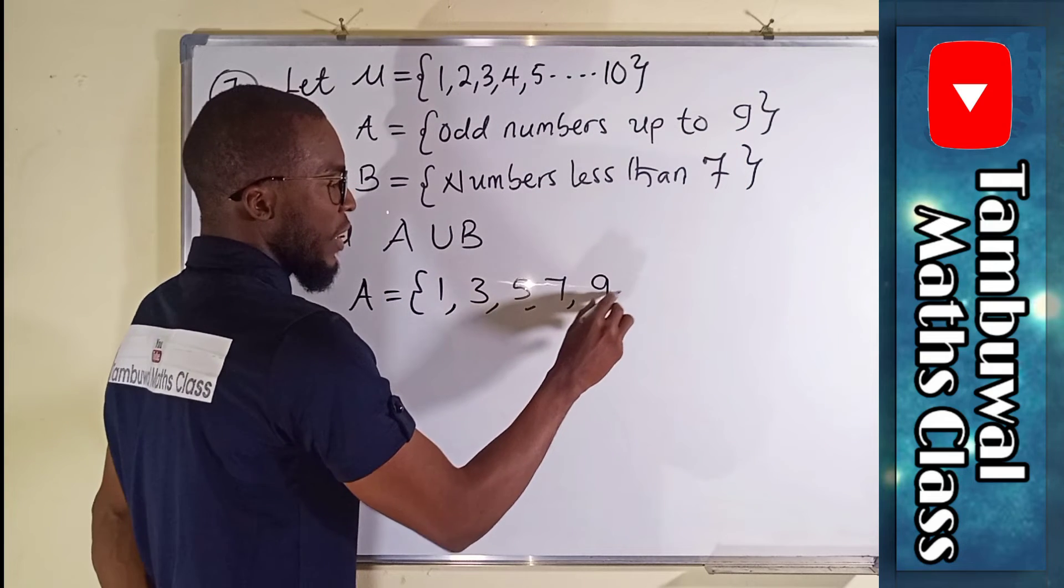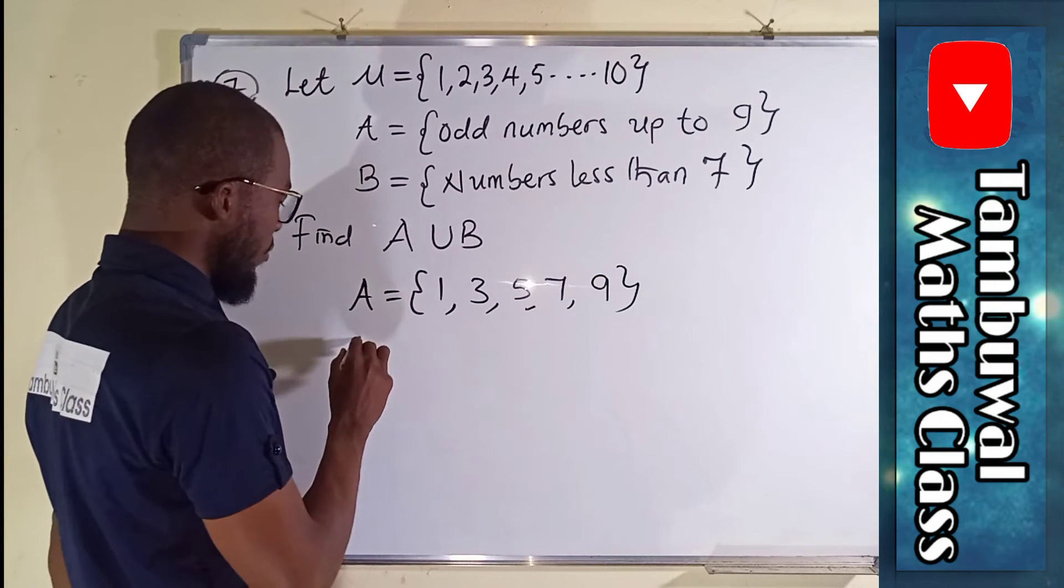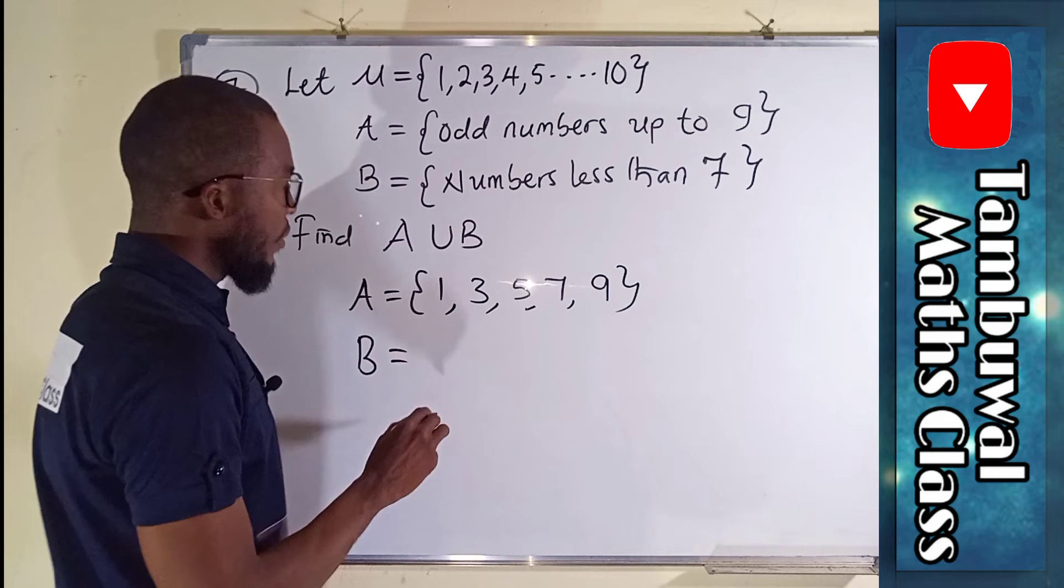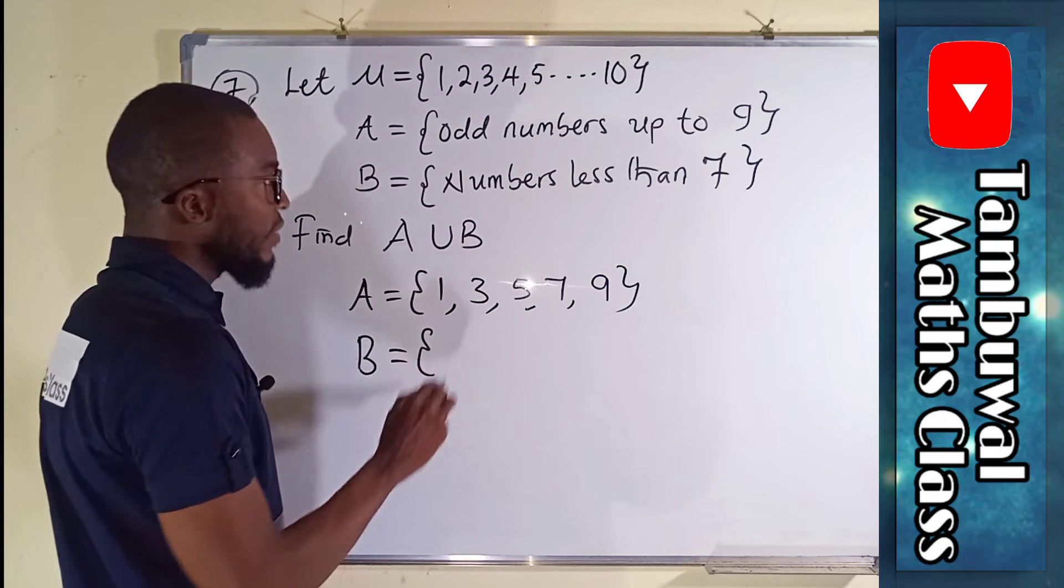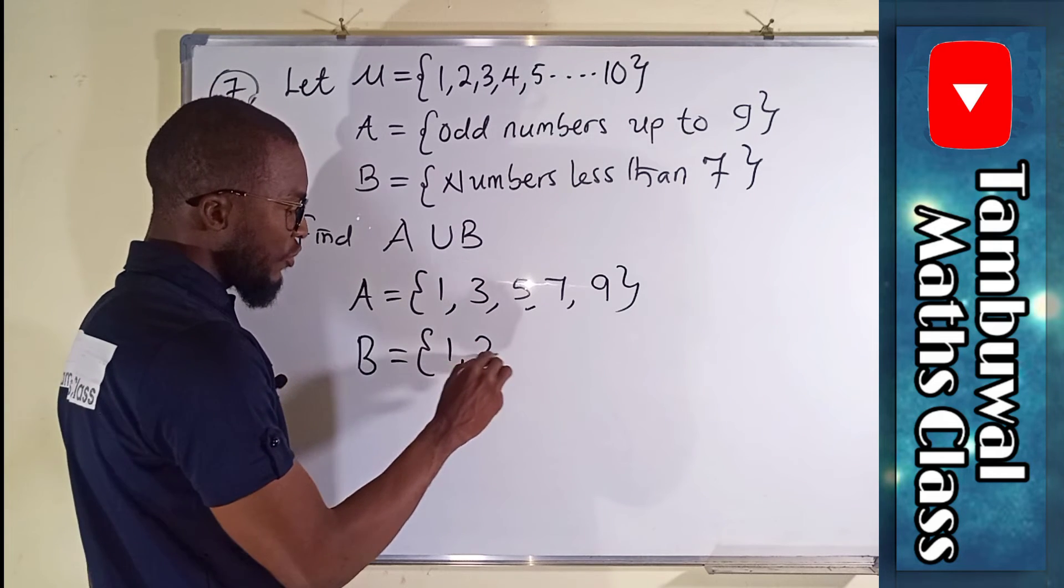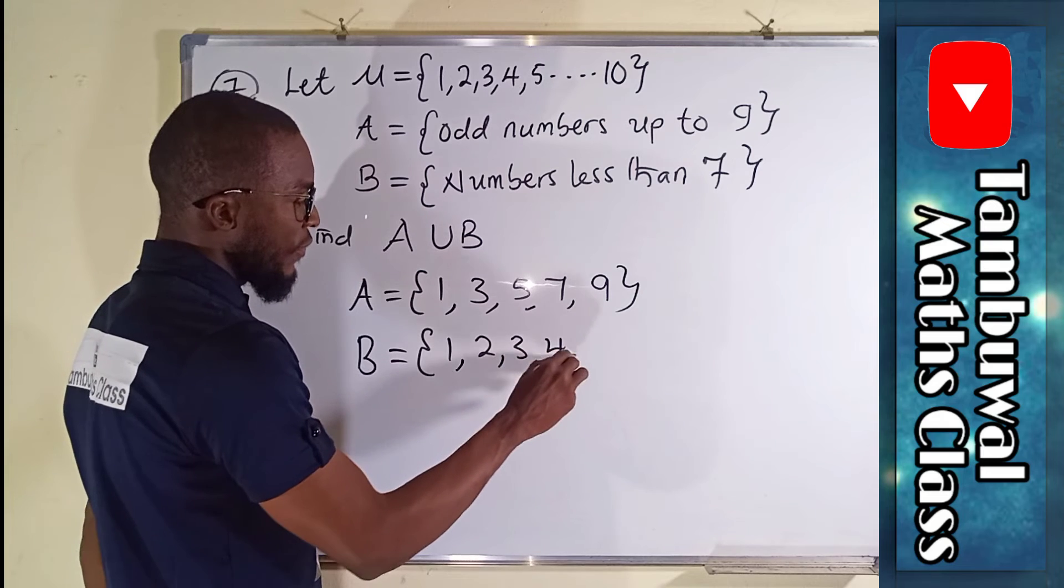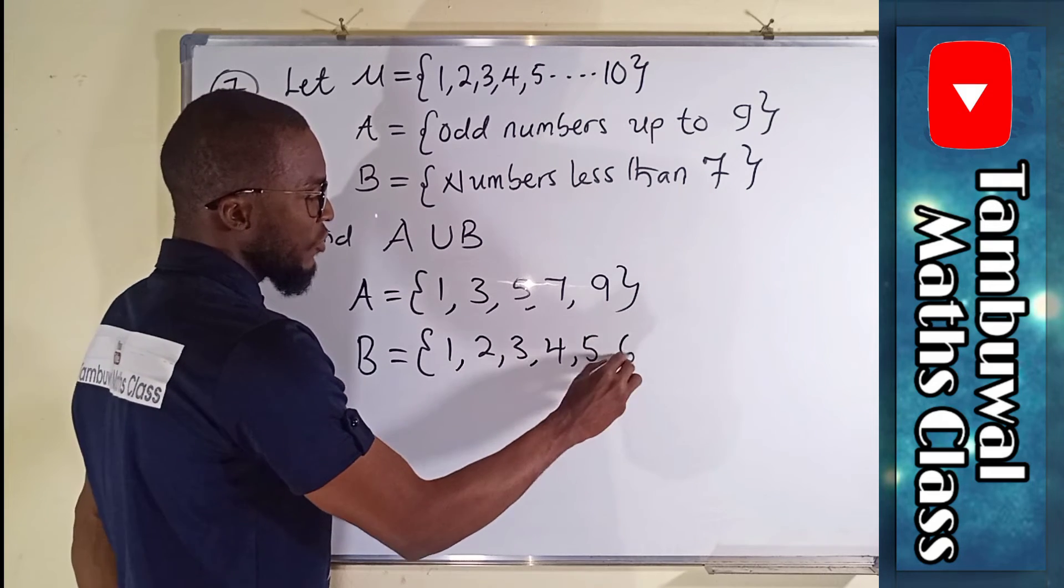We have three, because two is divisible. We have five, we have seven, we have nine. We stop because they say up to nine. Then B are numbers less than seven, so we have one, two, three, four, five, and six. We stop.